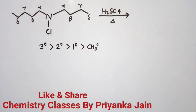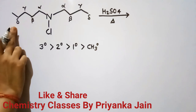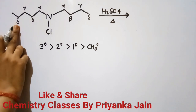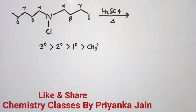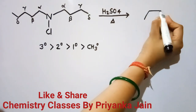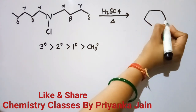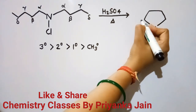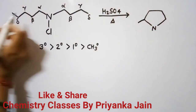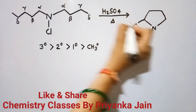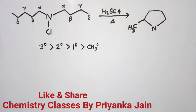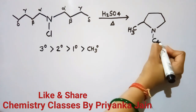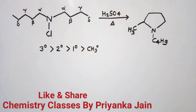So the secondary radical is more stable, and the hydrogen will be abstracted from the secondary delta position to give the more stable radical. A new bond is formed between that carbon atom and the nitrogen. The product has a pyrrolidine ring with the remaining chain as a side chain of C₄H₉.